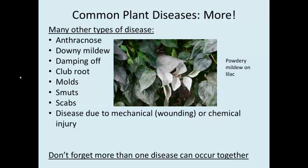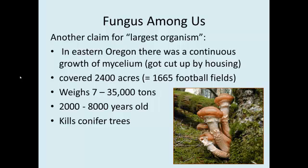Another important thing to remember is more than one disease can occur together. If you're trying to figure out what disease is on your plant, it's not going to be just one thing. Oftentimes, particularly in a stressed plant, one disease starts beating up on it, and then other secondary diseases can come in. Finally, in Oregon there was a continuous growth of mycelium — a fungus — that covered 240 acres, equivalent to 1,700 football fields. They estimate it weighed many tons, with estimates ranging from 10,000 to 35,000 tons. Radiocarbon dating showed it was very old, and it is a pathogen of conifer trees — it kills the conifers around it. It was partly cut up by a housing division that went in, but there's still a lot of it left. That includes our plant pathogen report.